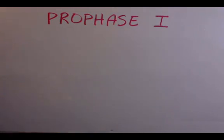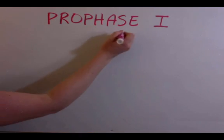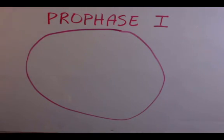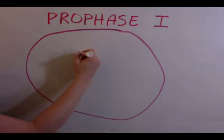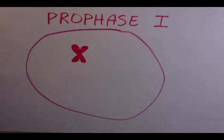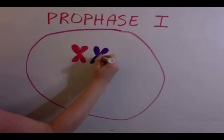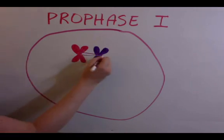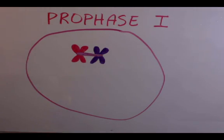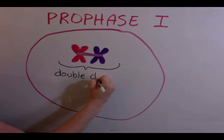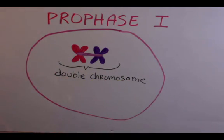During the beginning phase of meiosis in prophase 1, the main difference from meiosis to mitosis is that during meiosis, the chromosomes align with their homologous pair, resulting in a double chromosome, each with two chromatids.